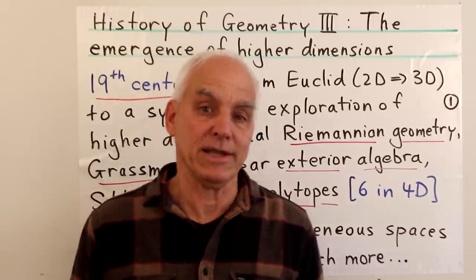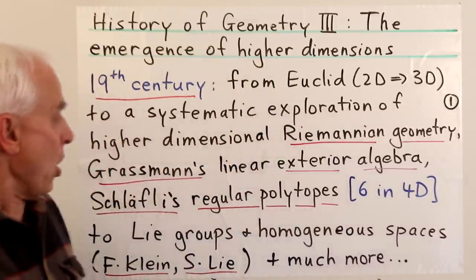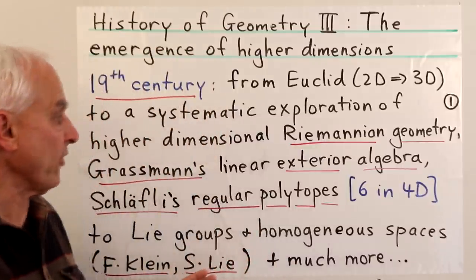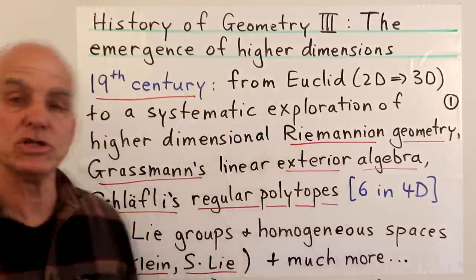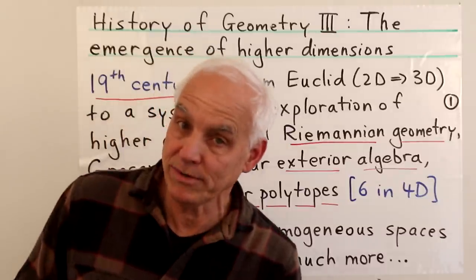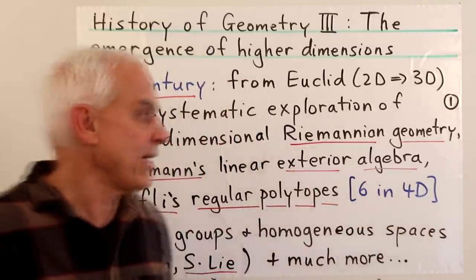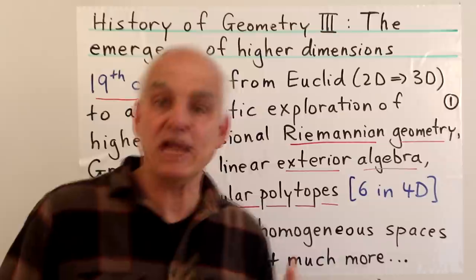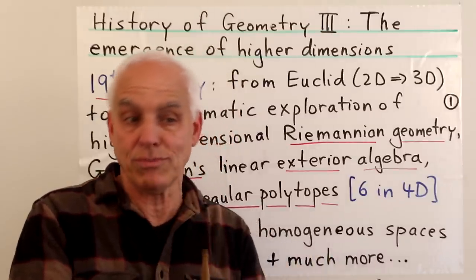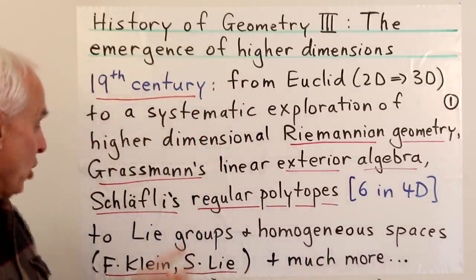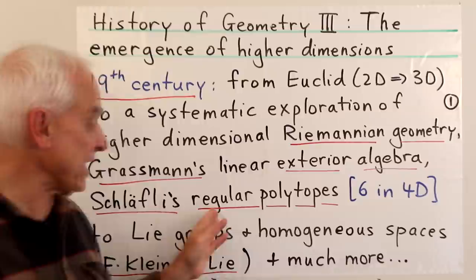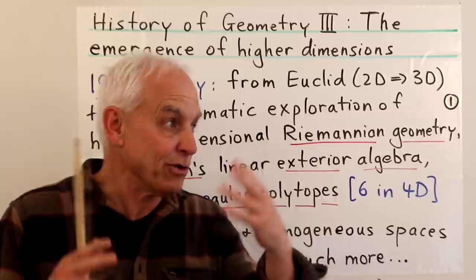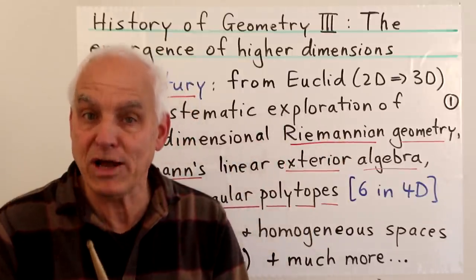Most of what they do know comes from linear algebra. In the 19th century, however, we saw all kinds of movement in those directions. Amongst many things, we can talk about the emergence of Riemannian geometry, associated with the idea of a manifold and higher dimensions. We can talk about Grassmann's linear exterior algebra, a very innovative approach to what ultimately became linear algebra.